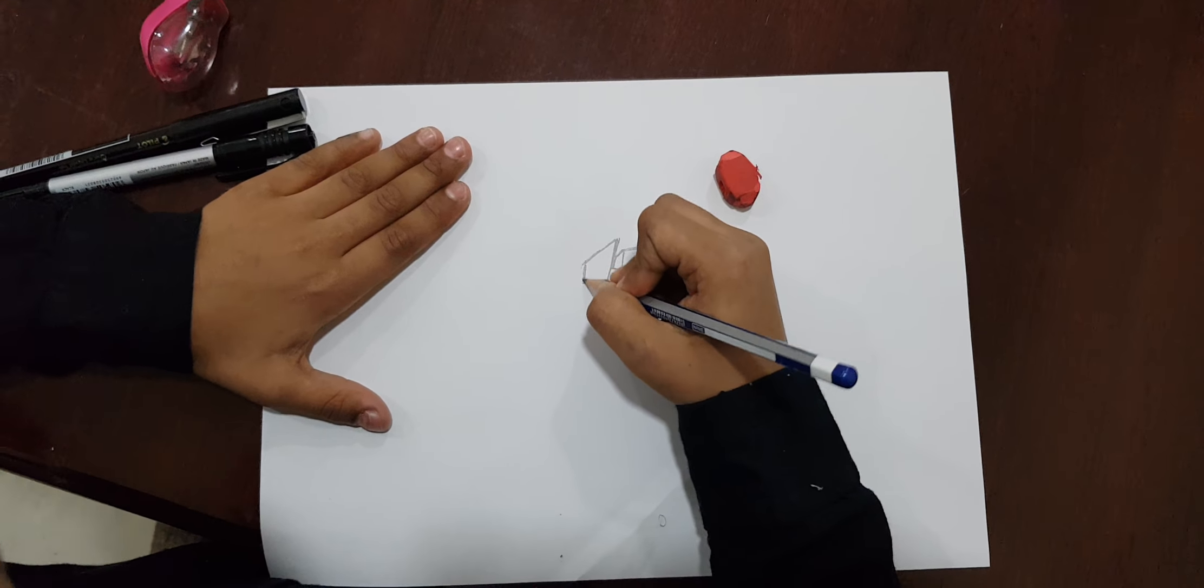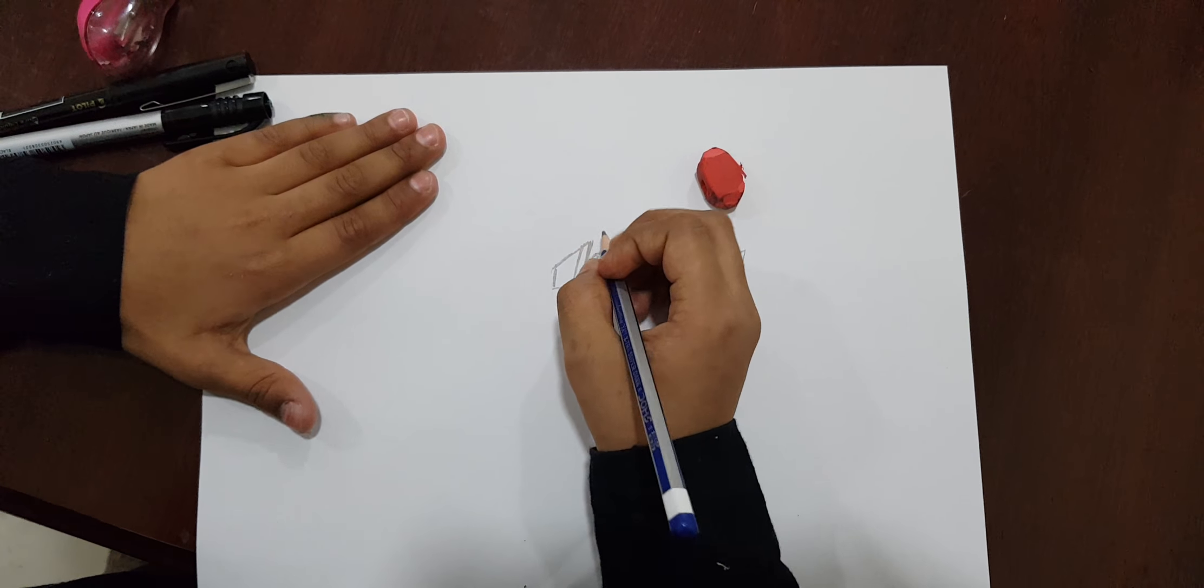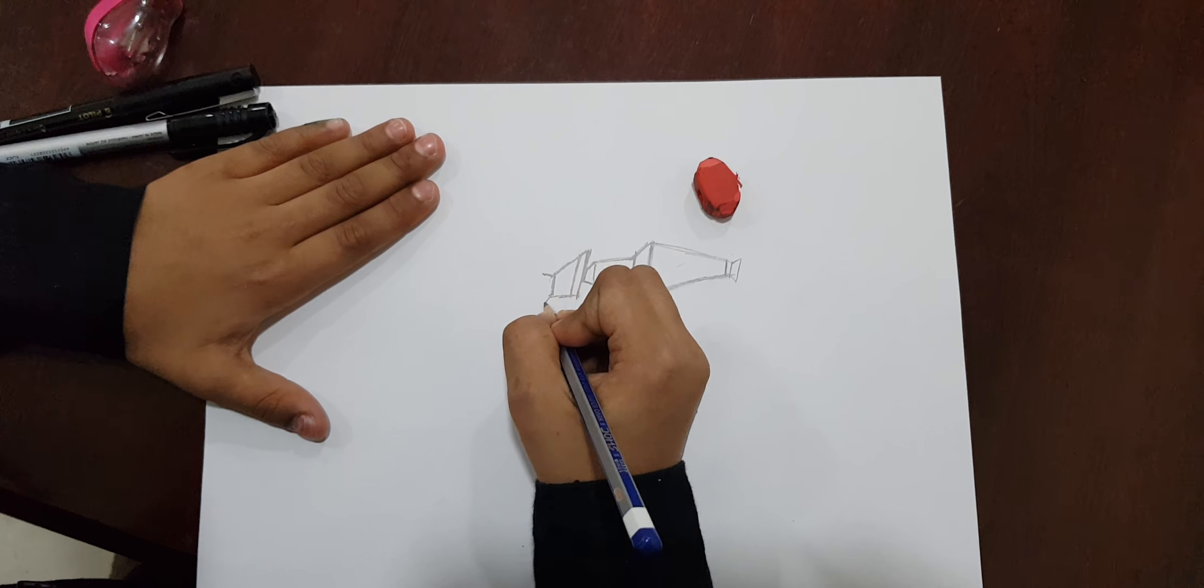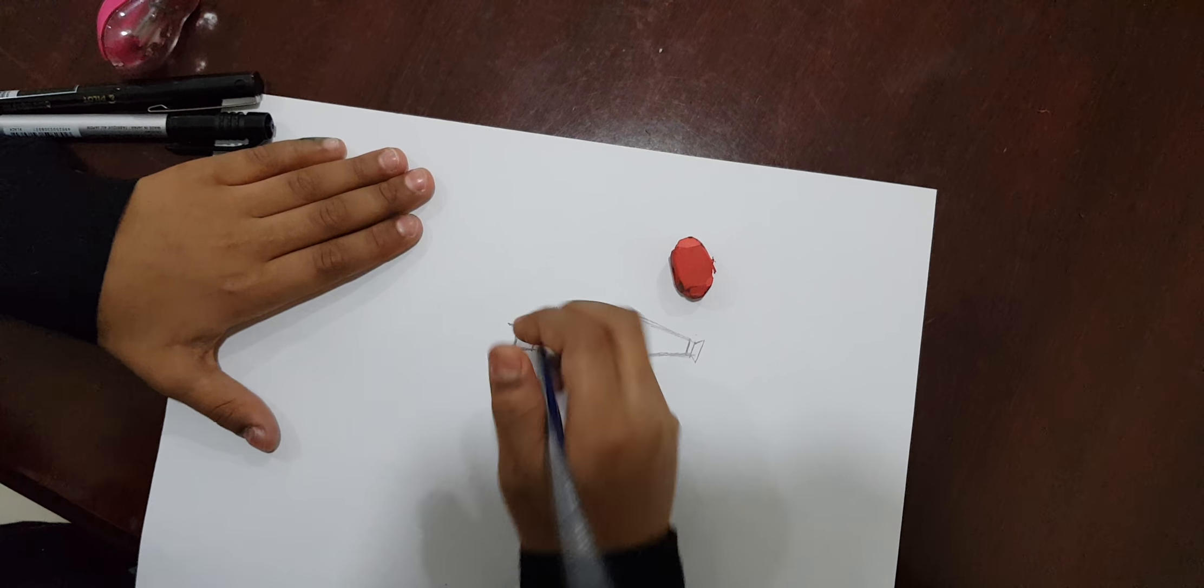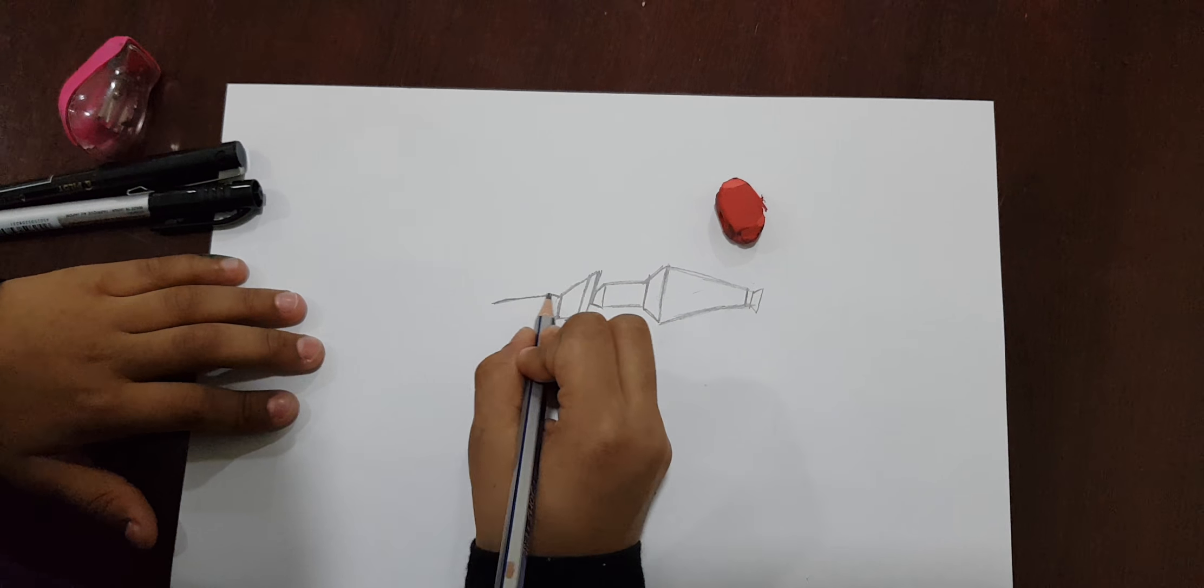Like this. Straight lines like that. Here. And slanting lines like that. Here. Like this.